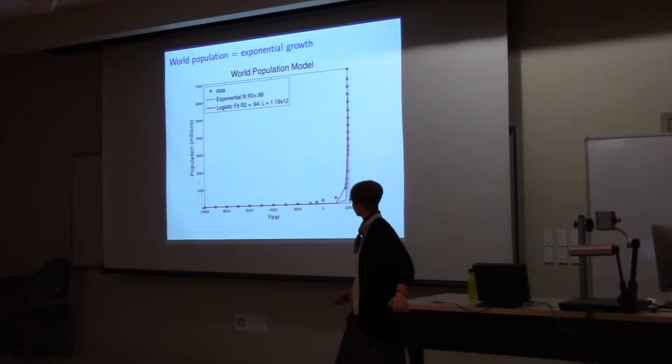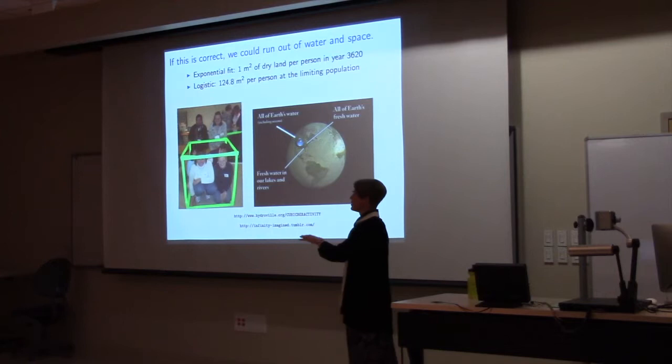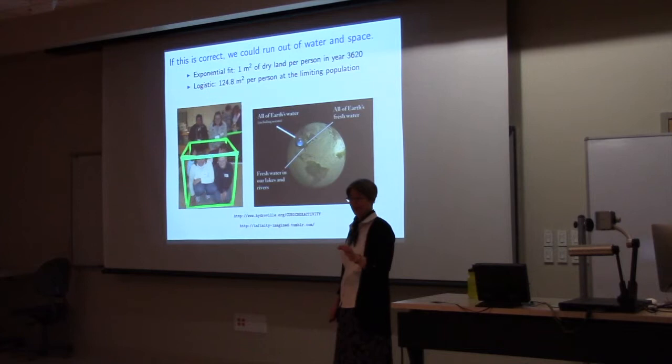Well you can do a little bit more mathematics with this. So if this is correct, we could run out of water and space. If exponential fit is correct, we end up with one meter squared of dry land per person in the year 3620. Okay 3620, that's a long way away. You and I don't need to worry about this, right? But remember the time scale that we looked at for that population data, it went back to negative 10,000 compared to the year 2000, so negative 10,000, that's 12,000 years ago. This is barely more than a thousand years in the future.